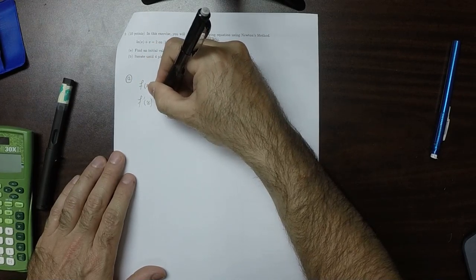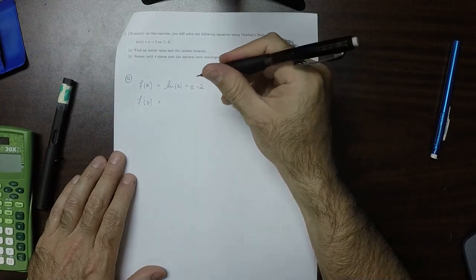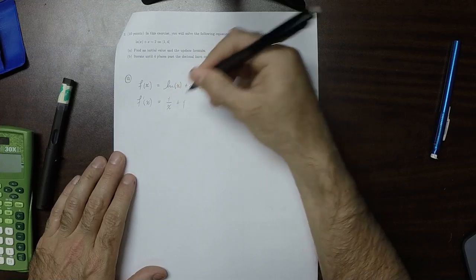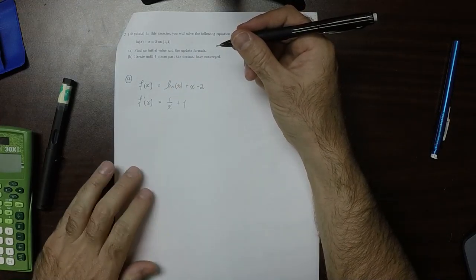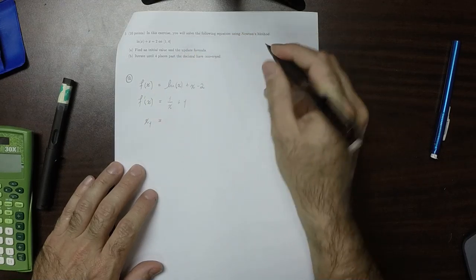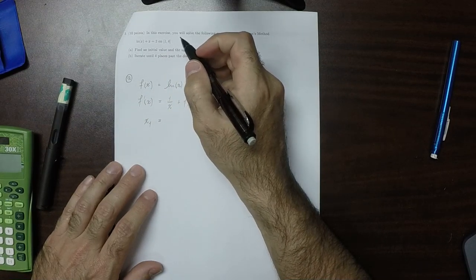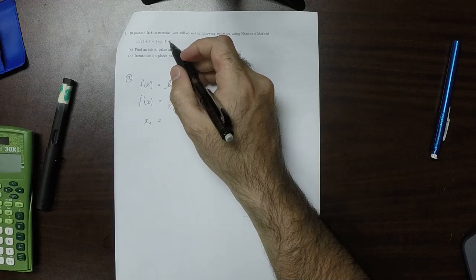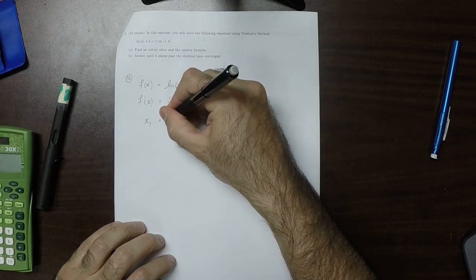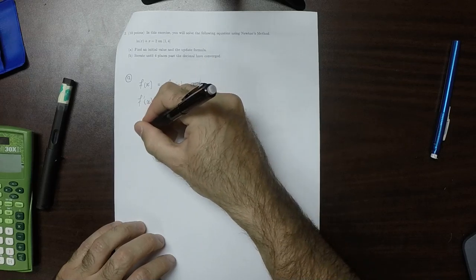The function's derivative is 1 over x plus 1. And then the initial value we can use is how about the midpoint of that. So that would be 1 plus 4 is 5 over 2 is 2.5. So we'll use 2.5.